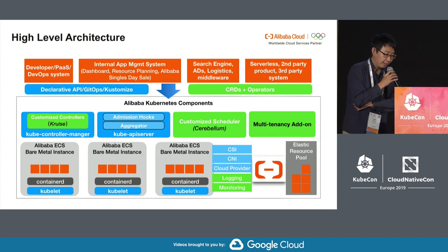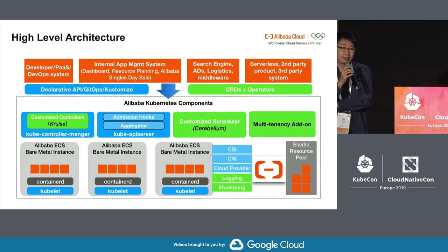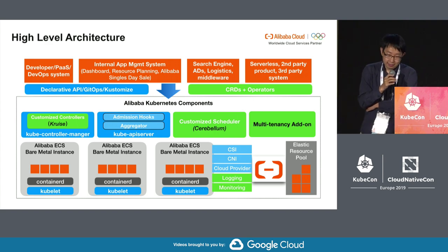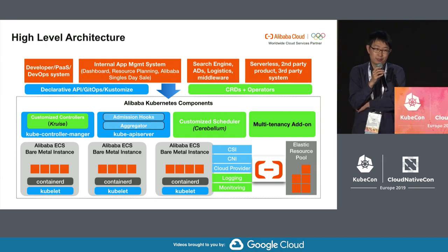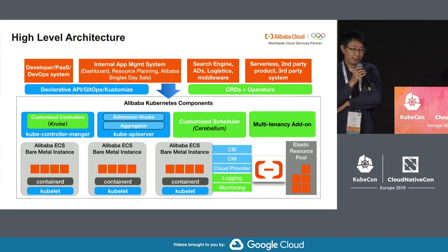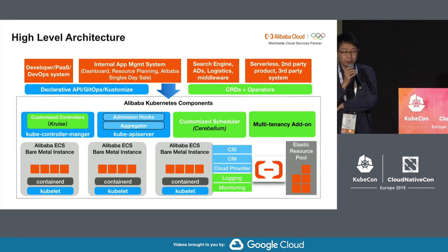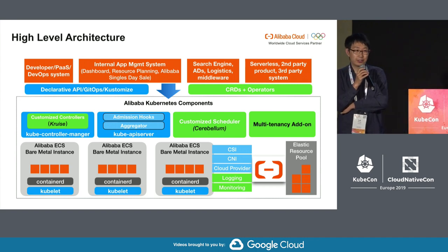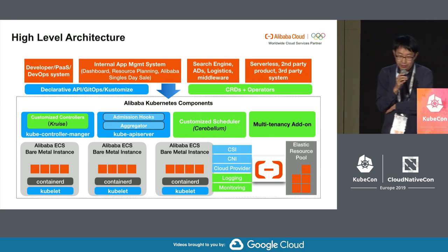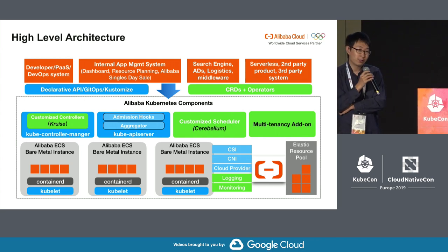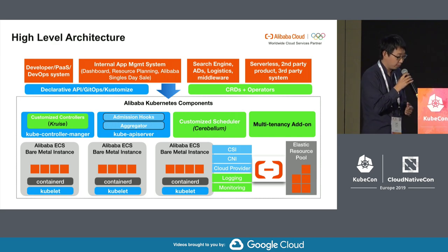This is the high-level architecture. We use a very large cluster to serve all business units from Alibaba Group, so this architecture uses a hard multi-tenancy model. Most components are open-source and upstream. For example, the Kube API server is 100% upstream. However, we do not use the default scheduler because we have customized scheduling policies and focus on scalability, so we wrote our own version. We also use Kube controller manager, but implement several of our own controllers because of our own rollout policies.